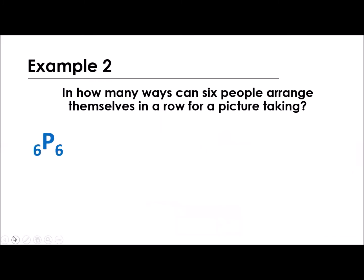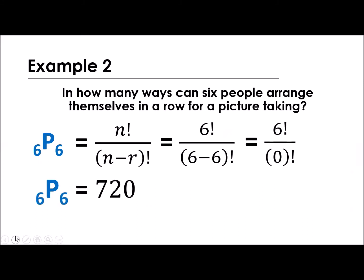So applying that in the formula, we will have permutation of 6 taken by 6 is equal to n factorial divided by n minus r factorial. Substituting the values, we will get this one. And then it becomes 6 factorial over 0, because 6 minus 6 is equal to 0. And what is 0 factorial again? That is 1. So 6 factorial is 720. So there are 720 ways for these 6 people to be arranged in a picture taking in one row.